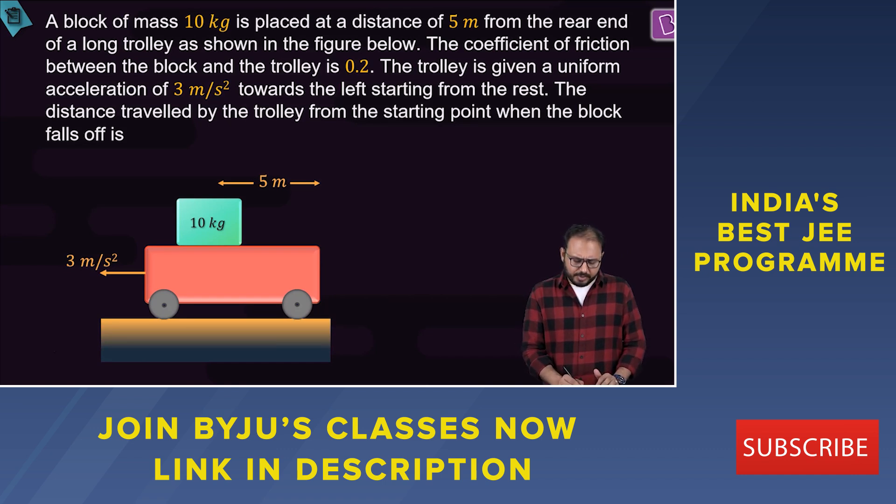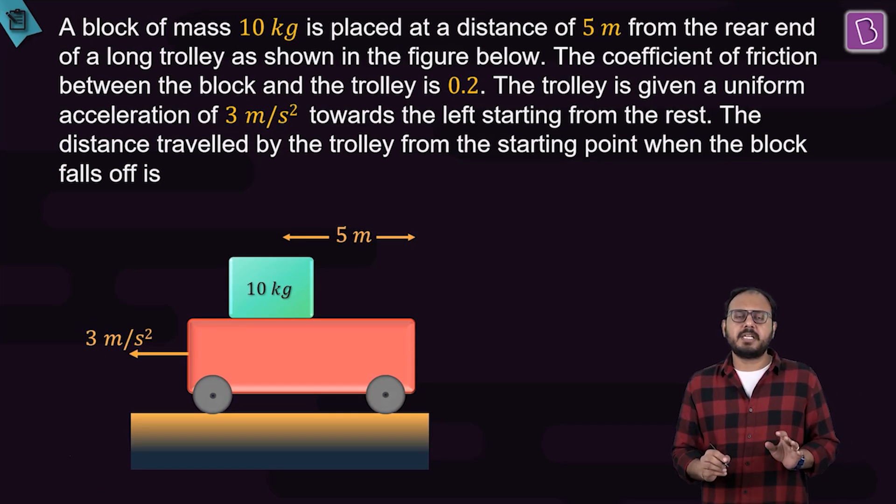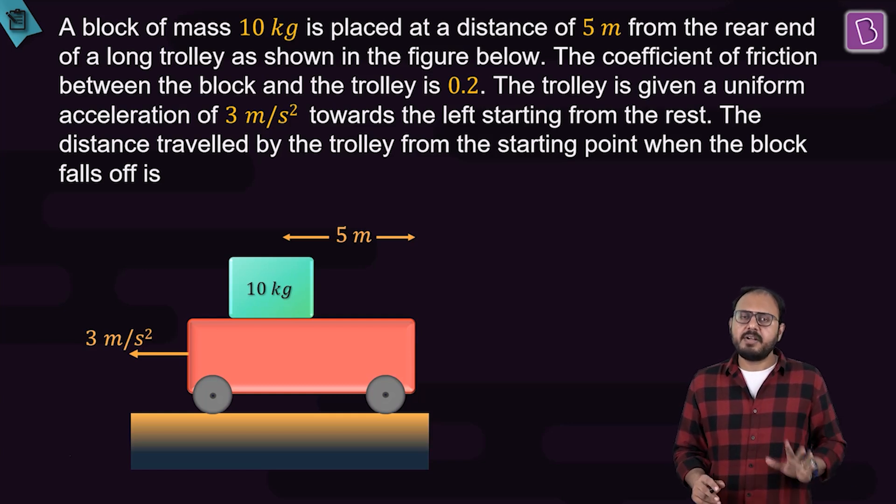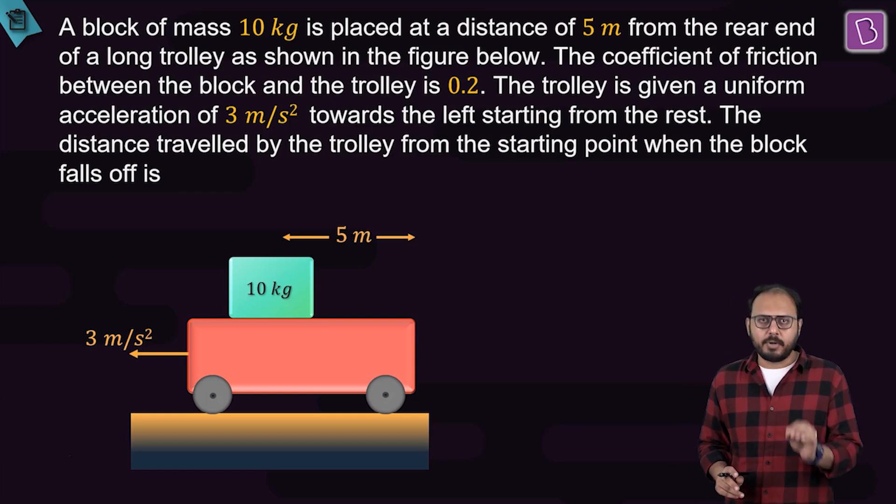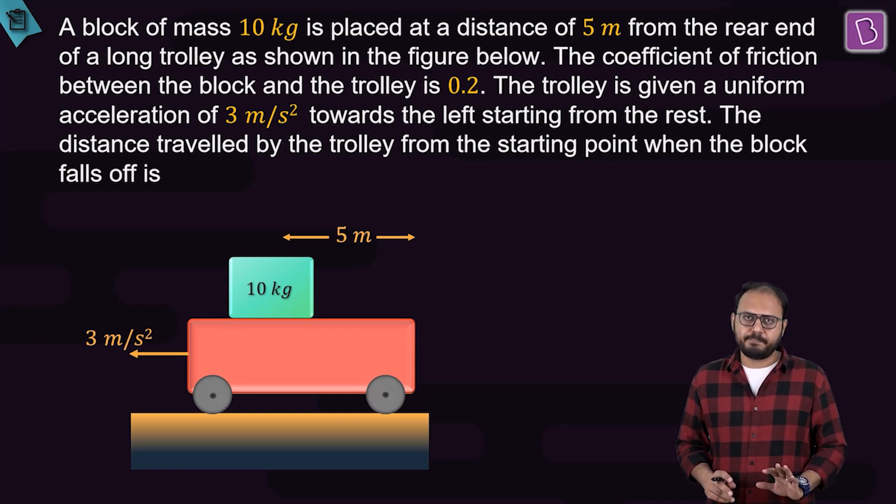You have a trolley which is being maintained at an acceleration of 3 meter per second square towards left as shown. Some external agent must be doing that. But what's given to me is that this 3 meter per second square acceleration of the trolley is constant towards the left-hand side in ground frame.